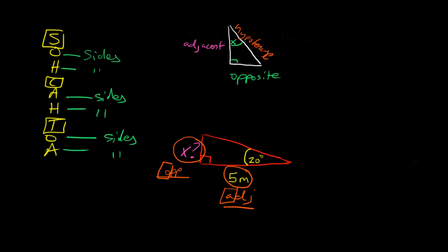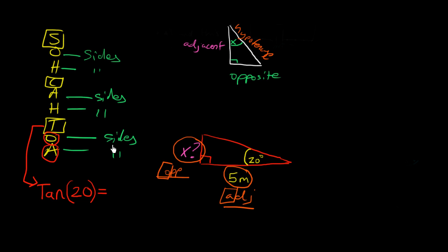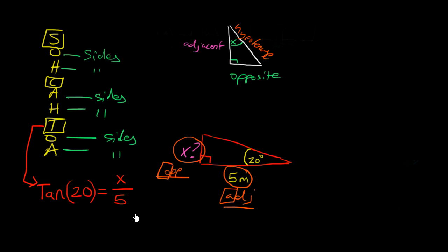The equation is: tan(20°) = opposite / adjacent. We don't know the opposite, so we call it X; the adjacent is 5 meters. So: tan(20°) = X / 5. Now a little bit of algebra comes into play. We're looking for X, which is on top of the fraction, so it's a simple one-step rearrangement — multiply both sides by 5 to get: X = 5 × tan(20°).